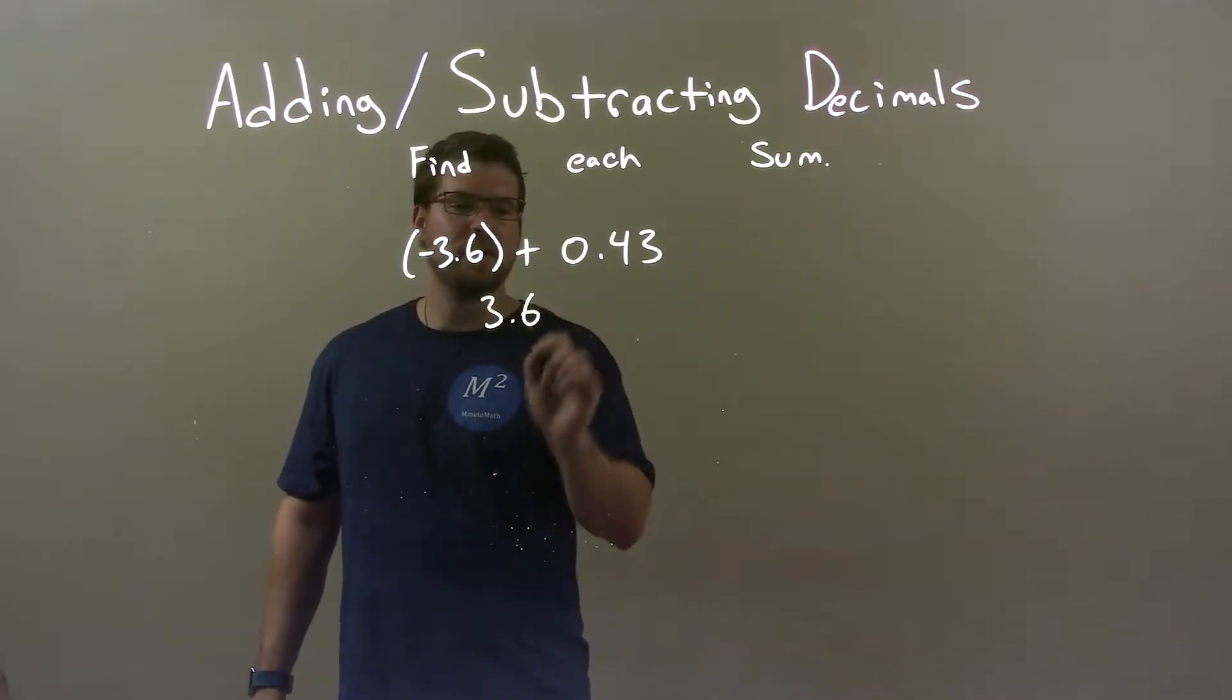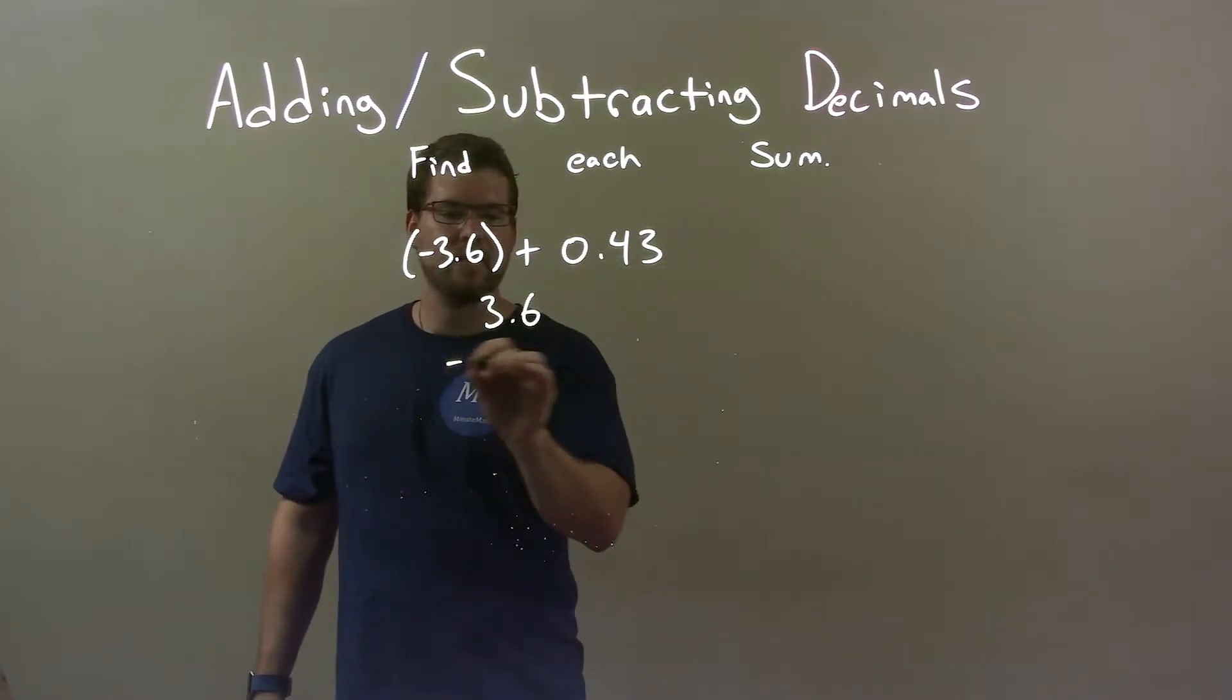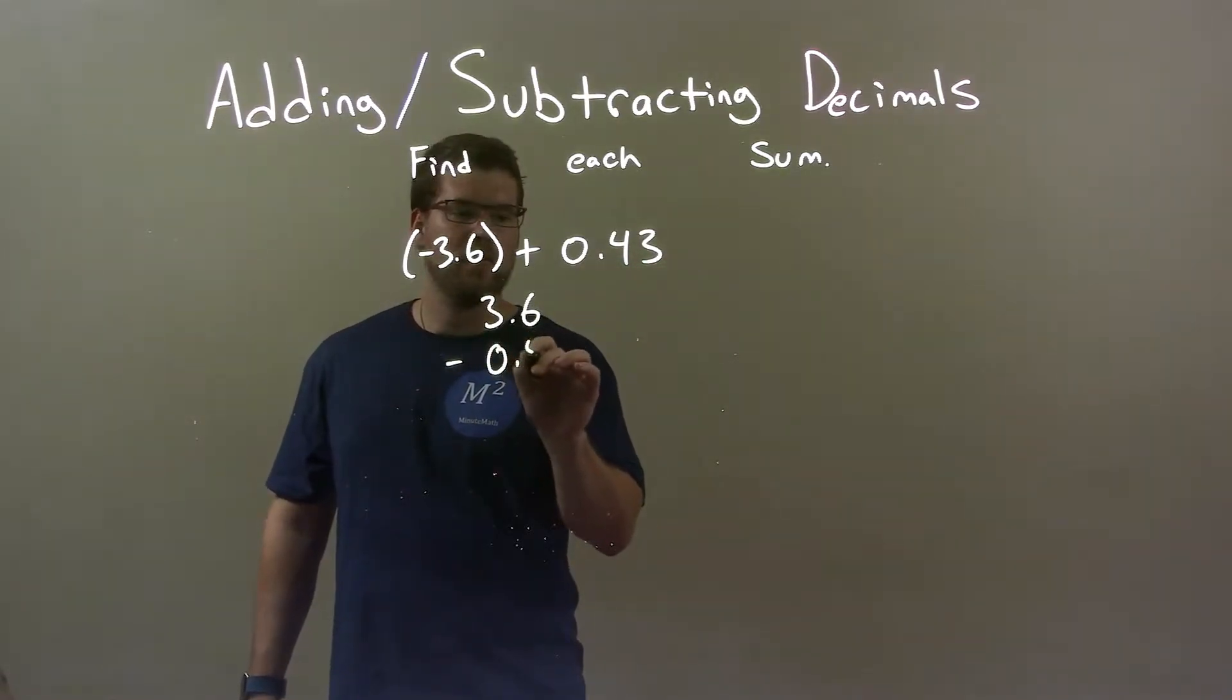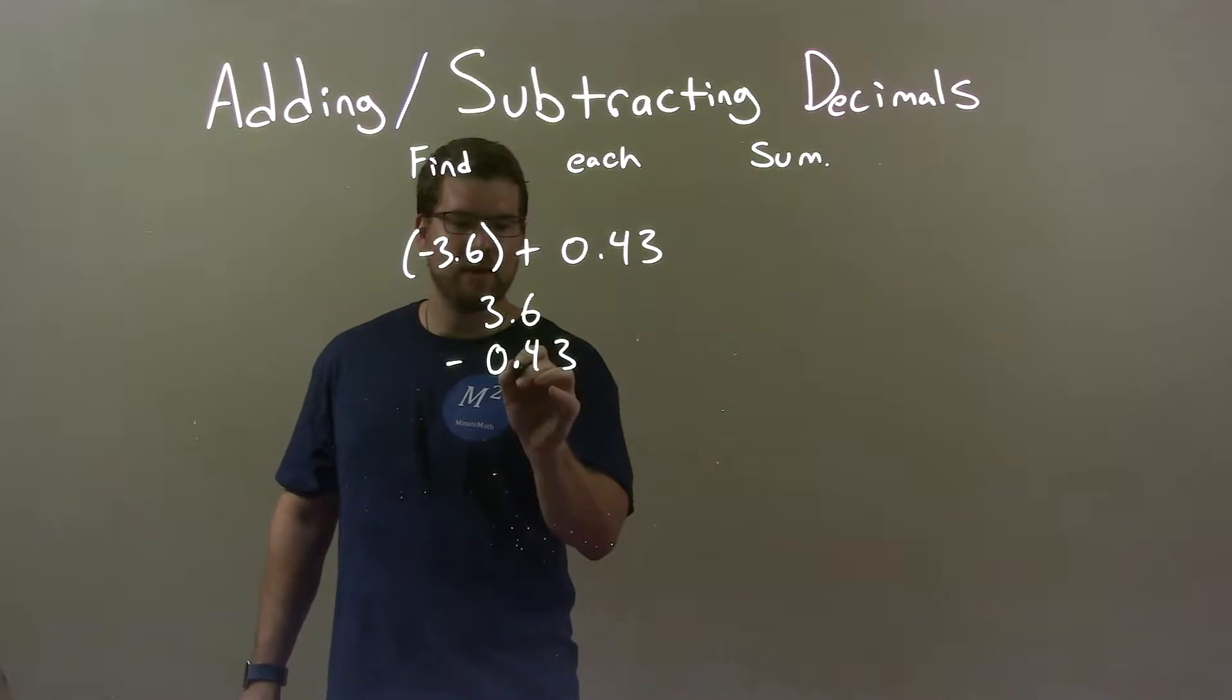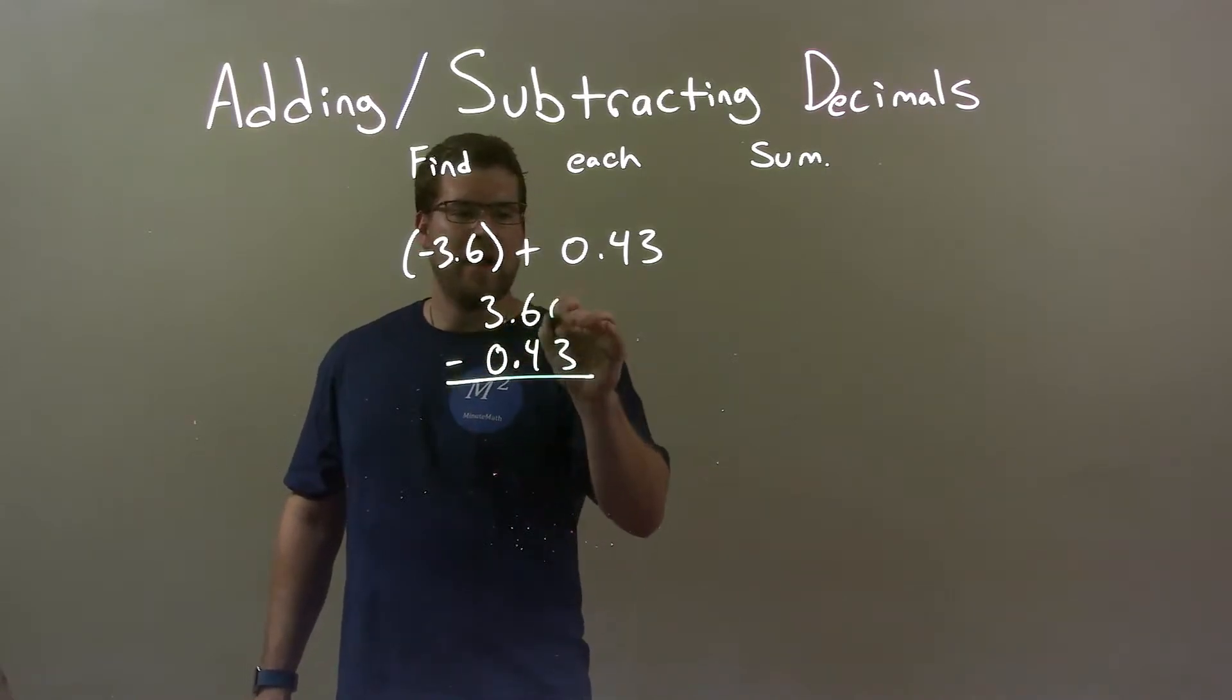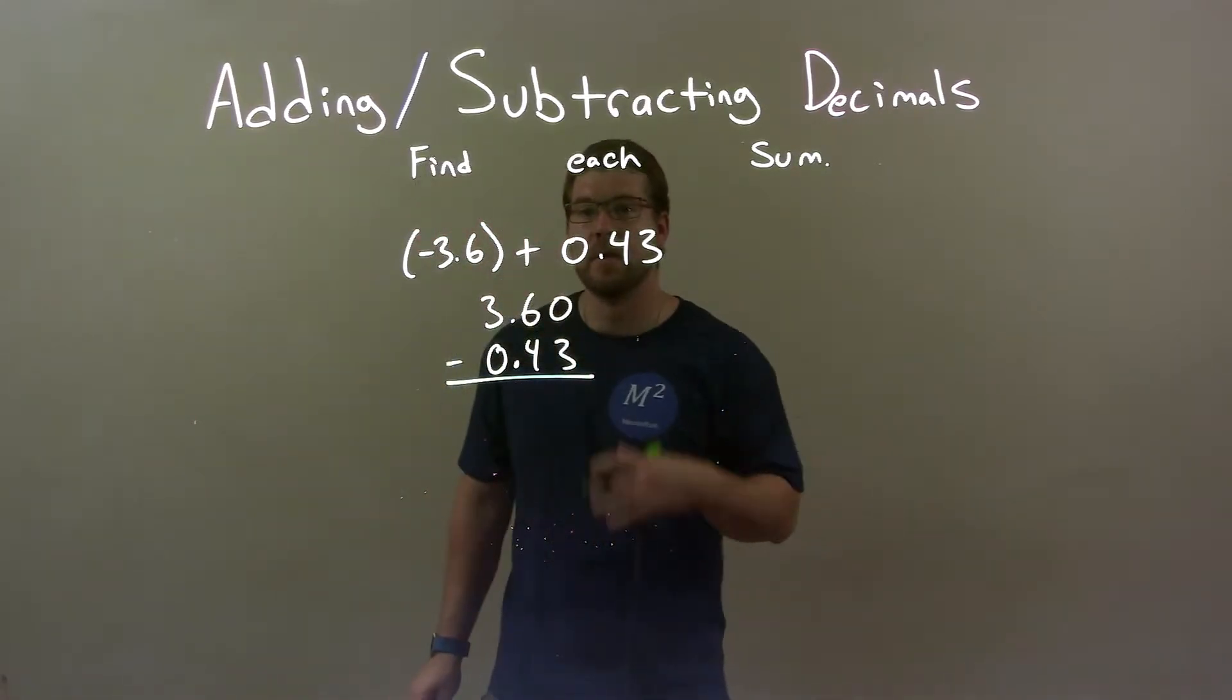So 3.6, and I'm going to subtract, find the difference here, 0.43, and make sure my decimal places are lined up. I'm going to add an extra 0 to that 6 to help me out, and now we're going to subtract.